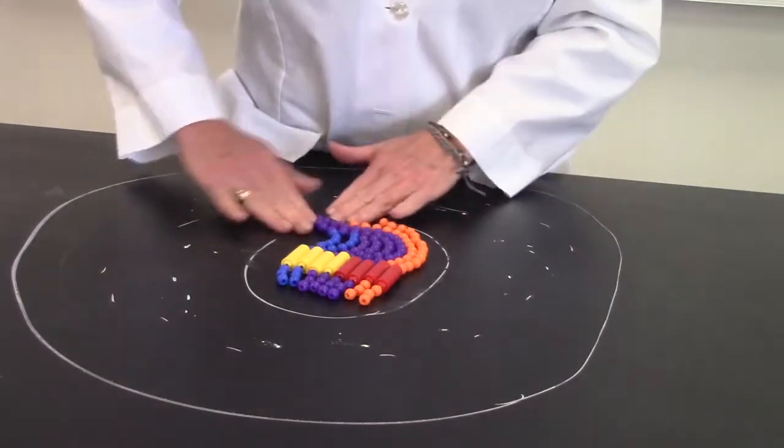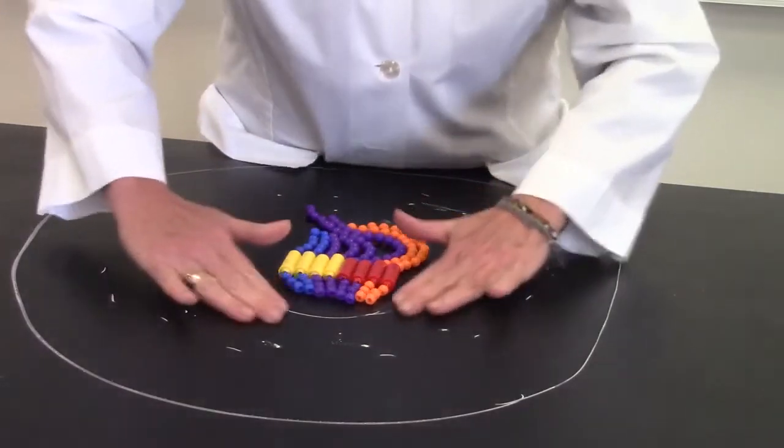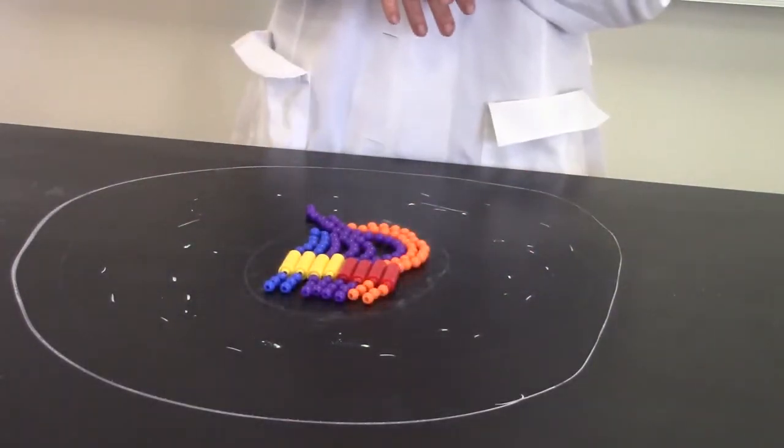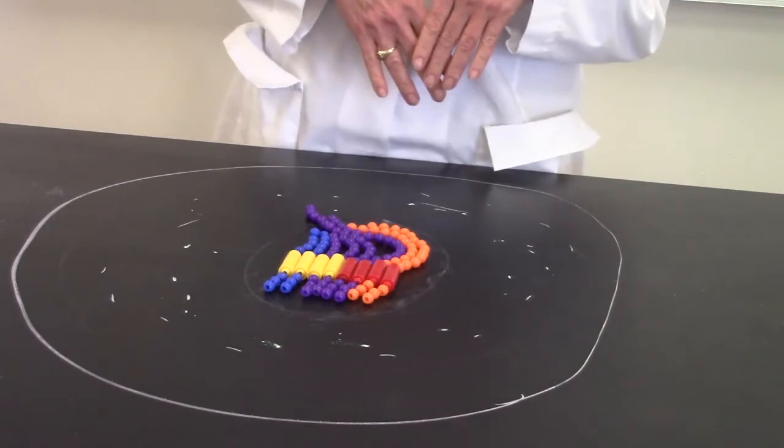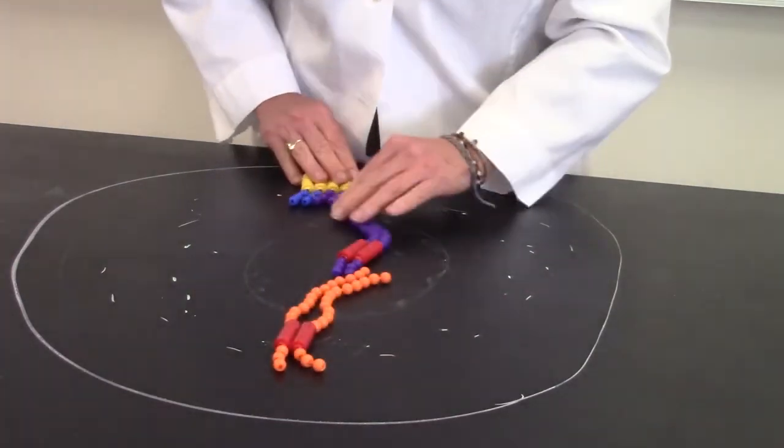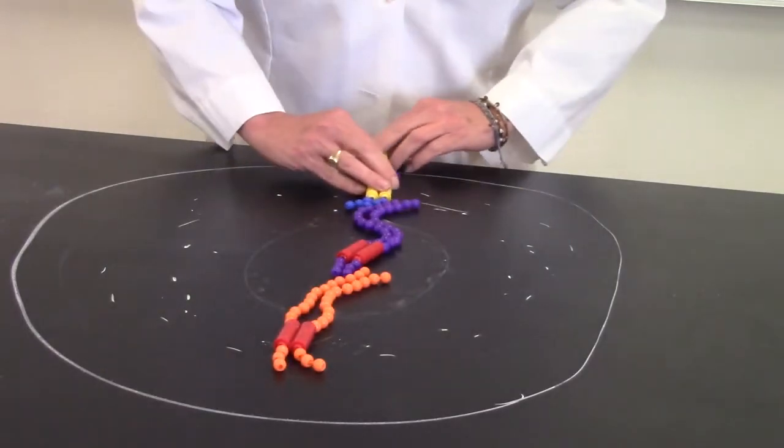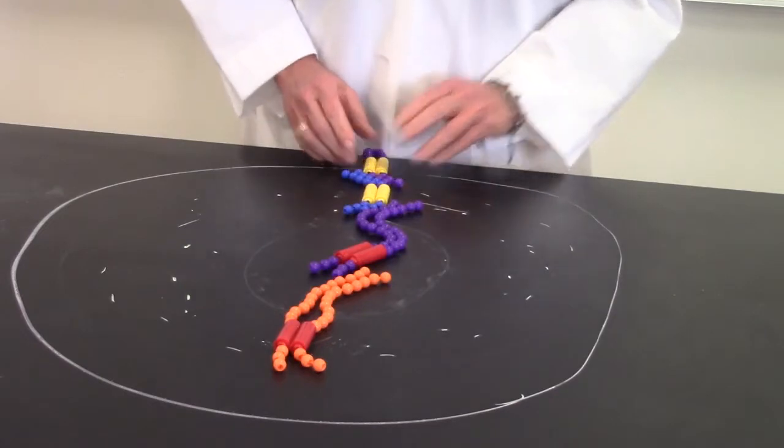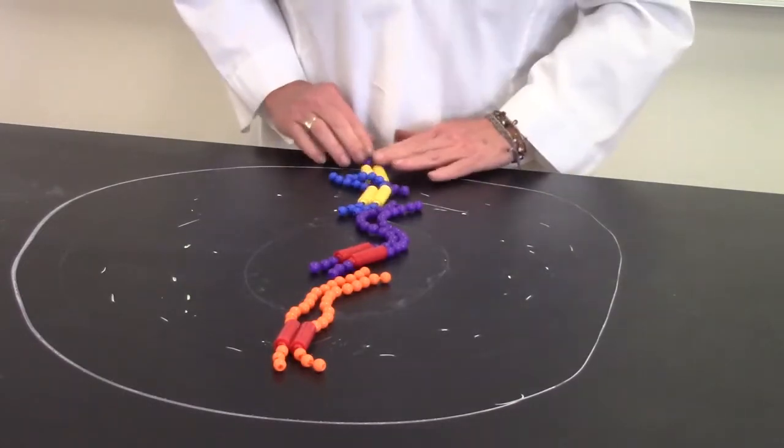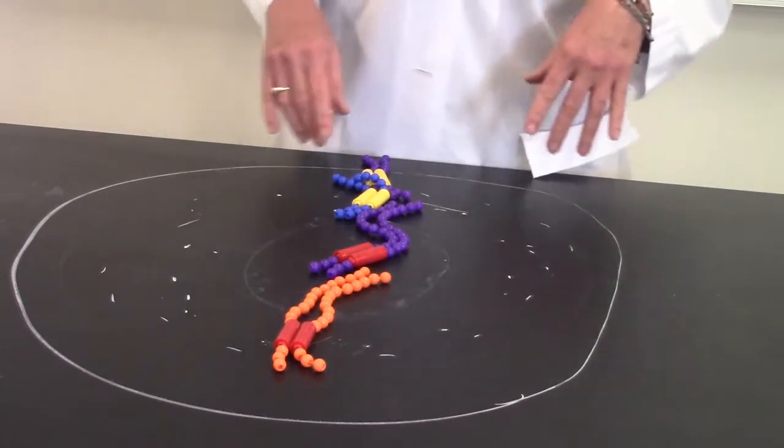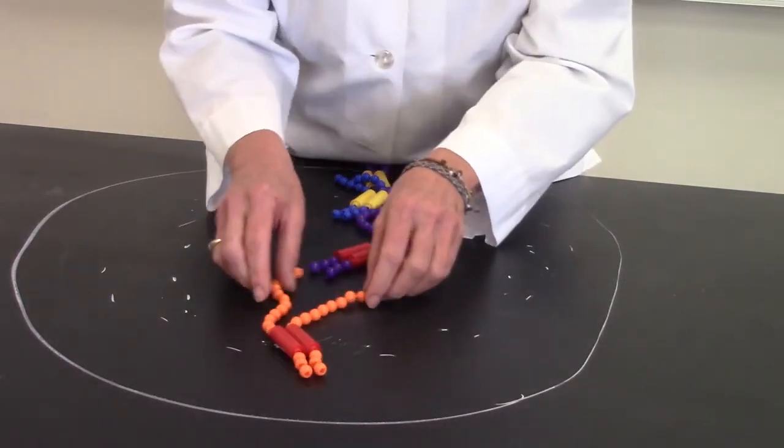Now we're going to go into PMAT. P is prophase - nuclear envelope breaks apart and chromosomes condense. Metaphase - all the chromosomes line up in the middle. That's metaphase in the middle to help you remember.